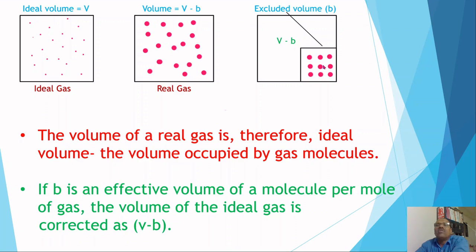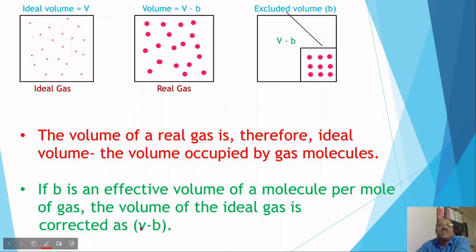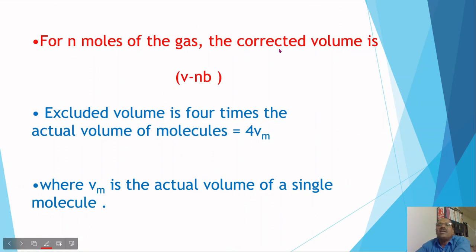The excluded volume b is the volume occupied by the gas molecules. The volume of the real gas is therefore the ideal volume minus the volume occupied by gas molecules. If b is the effective volume of a molecule per mole of gas, the corrected volume is V minus b. For n moles of gas, the corrected volume is V minus nb, where n is the number of moles.